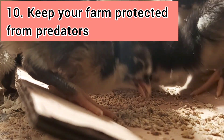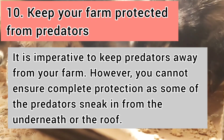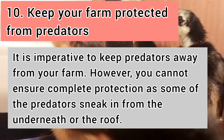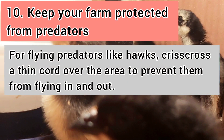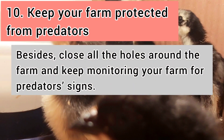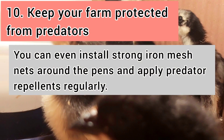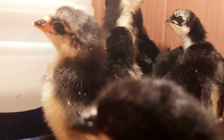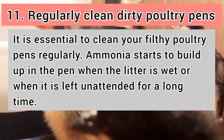Number ten: keep your farm protected from predators. It is imperative to keep predators away from your farm. Use an electric fence to keep larger predators like dogs and cats out of the range area. For flying predators like hawks, crisscross a thin cord over the area to prevent them from flying in and out. Close all holes around the farm, install strong iron mesh nets around the pens, and apply predator repellents regularly.